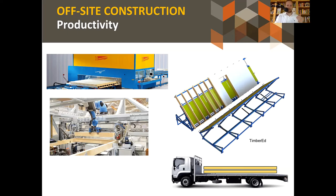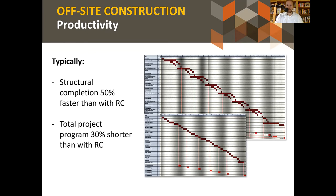Productivity is another big driver. Robotics are happening right now in Australian factories — Timber Trusses in Geelong has zero-labor robotic arms. Timber is an enabler of productivity: if you follow the right steps you can have a much more productive build and achieve cost savings. We're seeing structural completion rates 50% faster than reinforced concrete equivalents, and total project programs 30% shorter.